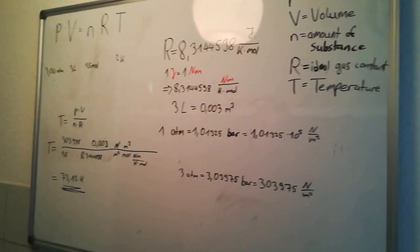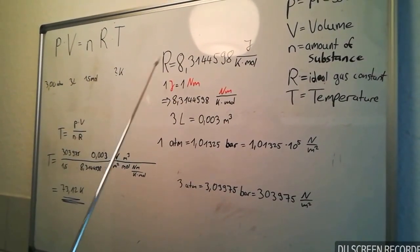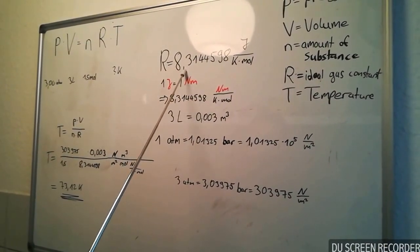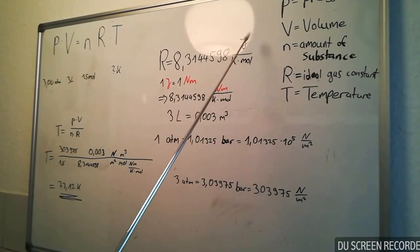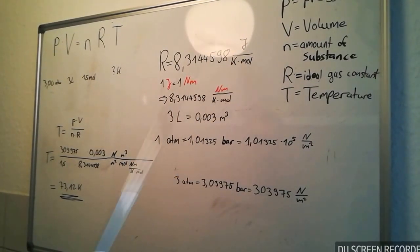What is the ideal gas constant? It is equal to 8.3144598 joule per kelvin mole.